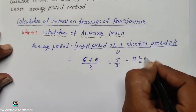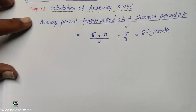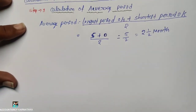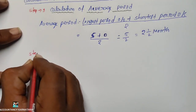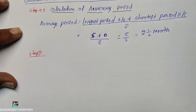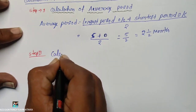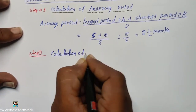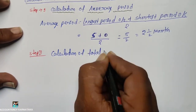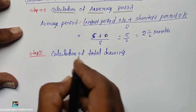So the average period is 5 by 2, that is 2 and a half months. Next, step number 2: Calculation of total drawings.